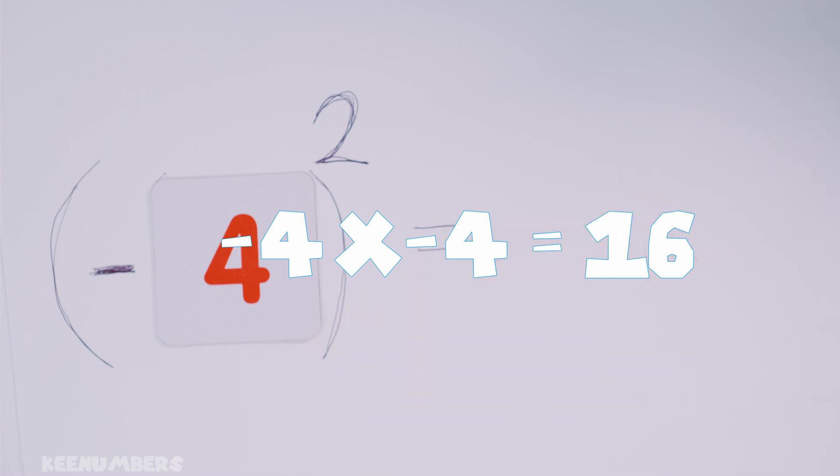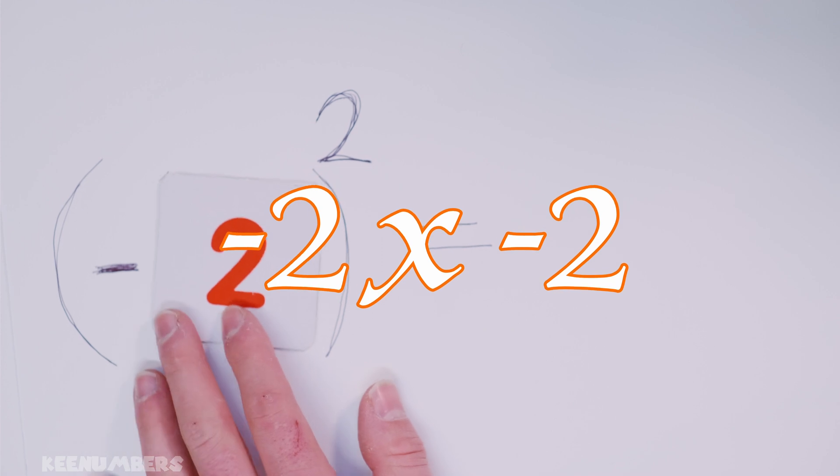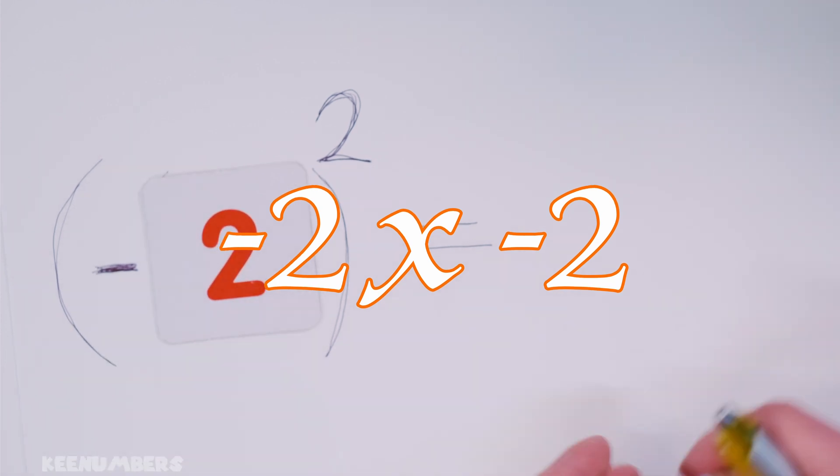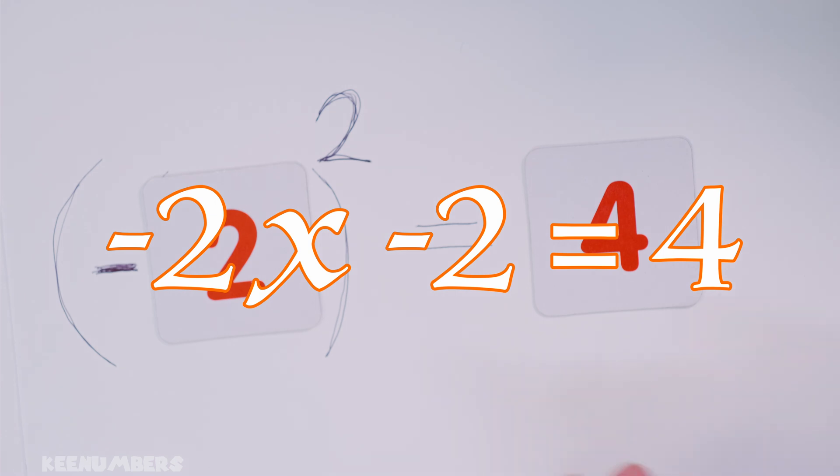But what if you have an easy one like negative two and then you square it? That means negative two times negative two and a negative number times a negative number, that's going to be positive. So what's two by two? You know that one. Too easy. That's four.